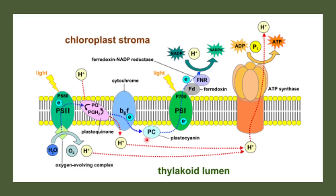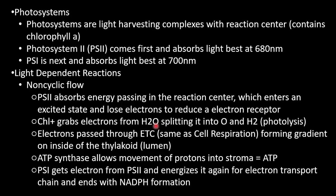Electrons pass through the electron transport chain, forming a concentration gradient on the inside of the thylakoid. The protein channel uses electron energy to pump H+ ions to one side, creating a higher concentration inside. Molecules always move from high to low concentration, so H+ ions later pass through ATP synthase — the only exit — causing it to spin and converting ADP and phosphate into ATP.